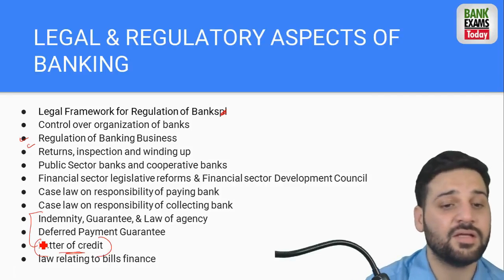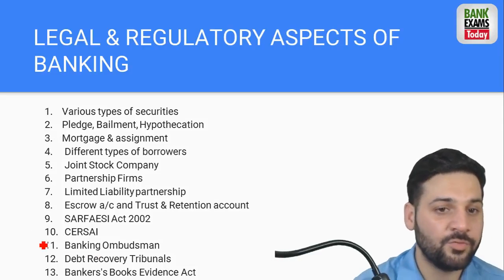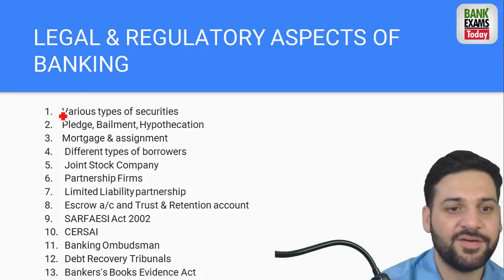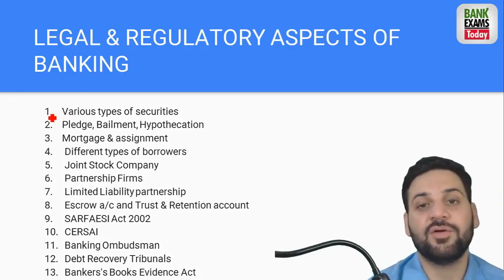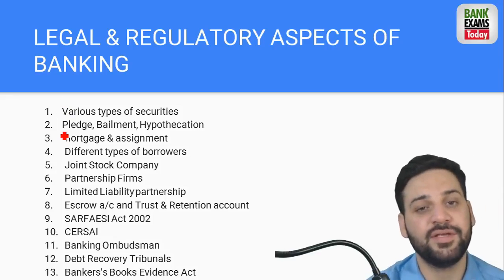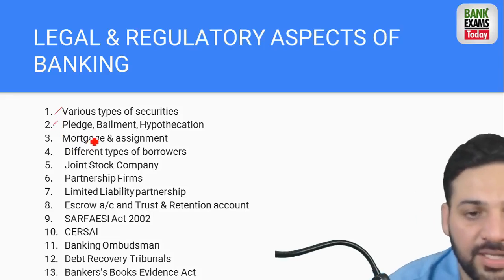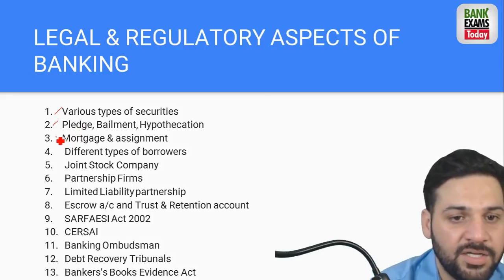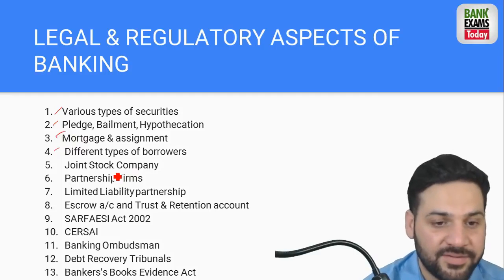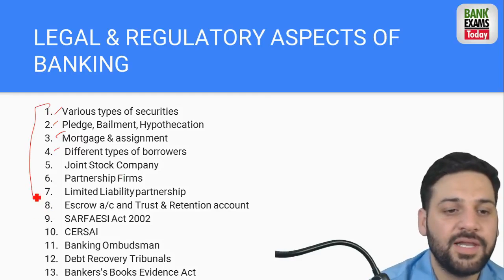From these three - Negotiable Instruments, Company Law, and Contract Act - the maximum questions come. Moving further, various types of securities are simple topics. If you regularly follow bankexamstudy.com or go to throttle.com, you will find notes on all these topics free of cost. Securities types include pledge, bailment, hypothecation, mortgage, assignment. Different types of borrowers - LLP, escrow, SARFAESI Act, reimbursement, debt recovery tribunal - these are all very simple topics.